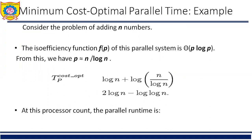For the cost optimal system, consider again the problem of adding n numbers. The isoefficiency function f(p) of this parallel system is O(p log p). From this we have p is approximately equal to n / log n. Finally we get the cost optimal time: tp_cost_optimal = log n + log(n / log n) = 2 log n - log log n. At this processor count the parallel runtime is given by this equation for tp.